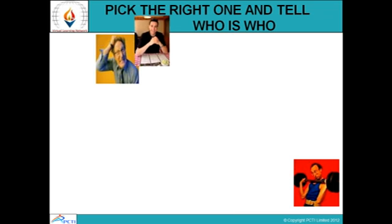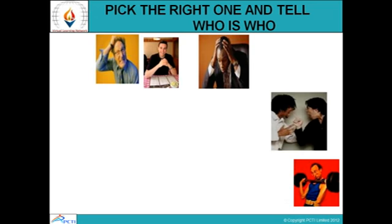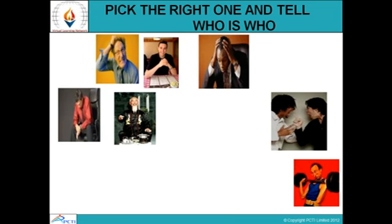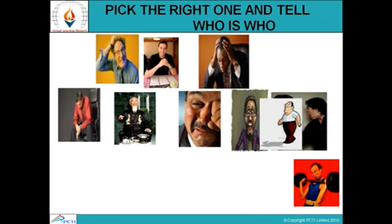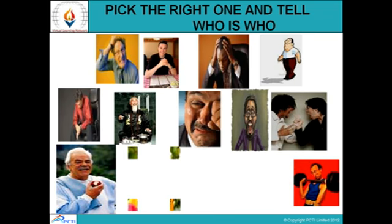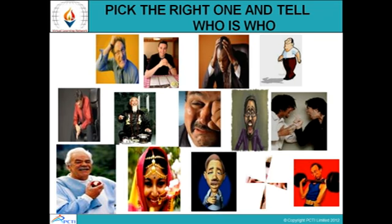Pick the right one and tell who is who. From these people, who do you think are the stressed and who do you think are the happy ones? We can see various images — some people are very happy, laughing, or smiling; some are crying, sitting with hands on their head, or working out. We see a person touching their head, a person who is happy and relaxed, someone having an apple, two people fighting, and a person crying. Pick the right one and tell who is who.